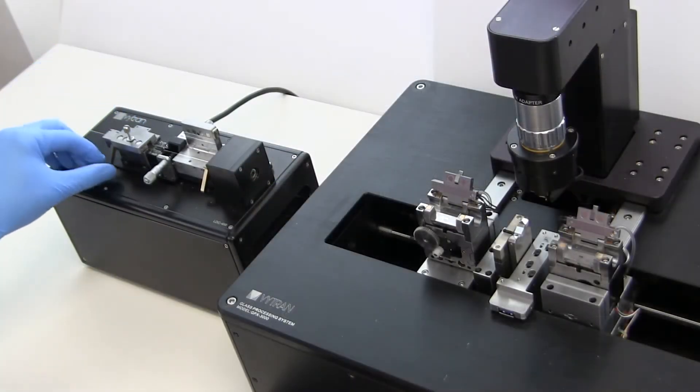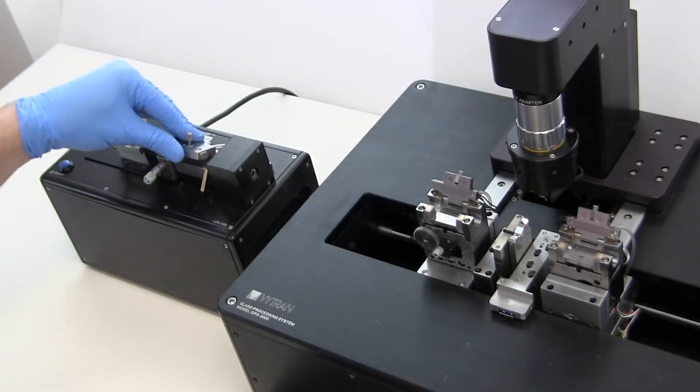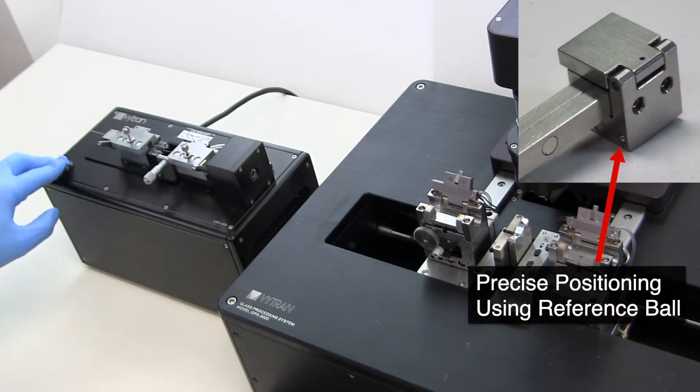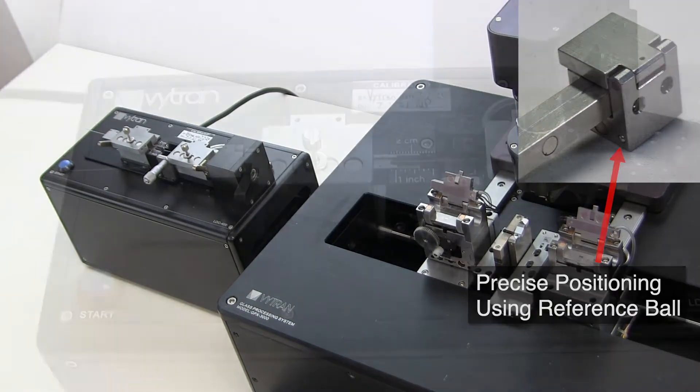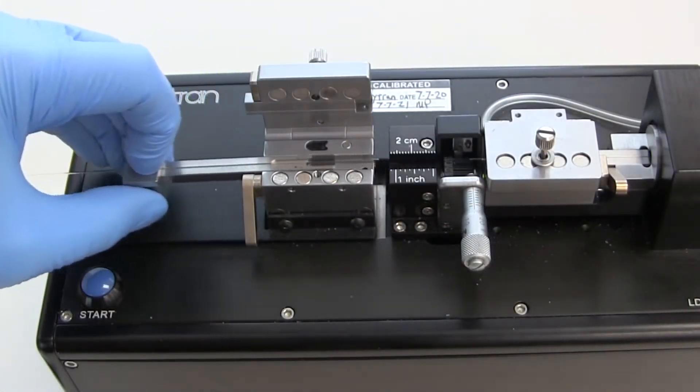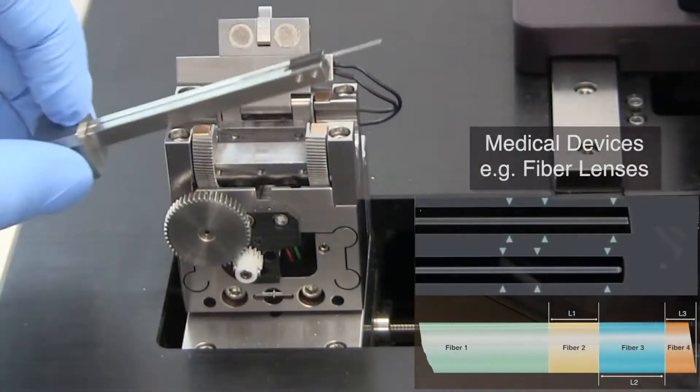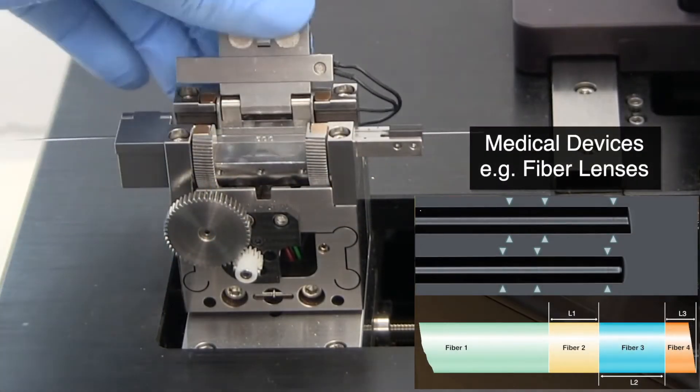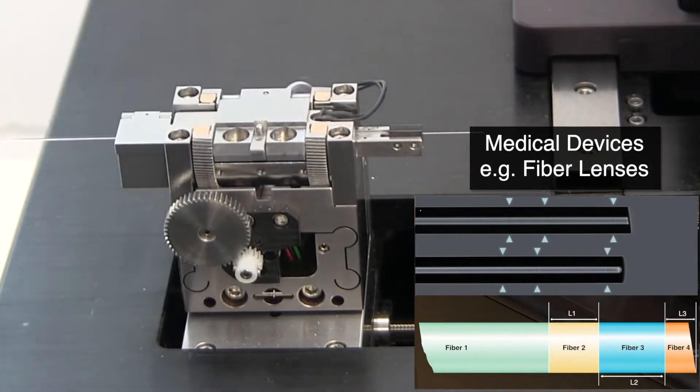The transfer insert assembly maintains accurate fiber position registration as the fiber is moved from the cleaver to the glass processor. This allows precision fiber optic assemblies using fused optical components to be manufactured such as medical probes and sensing devices.